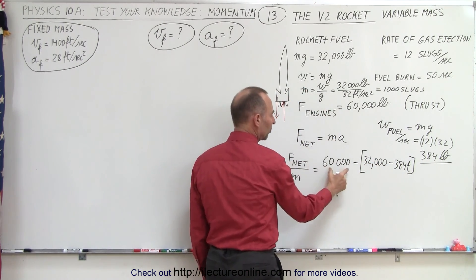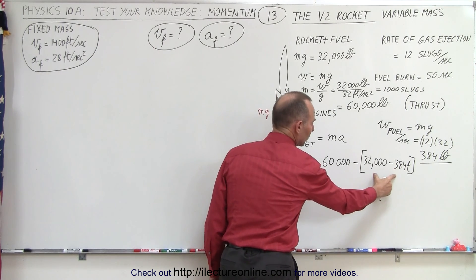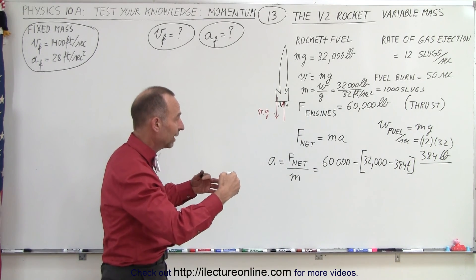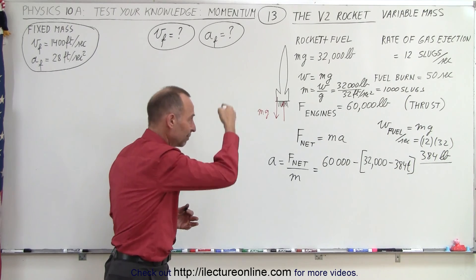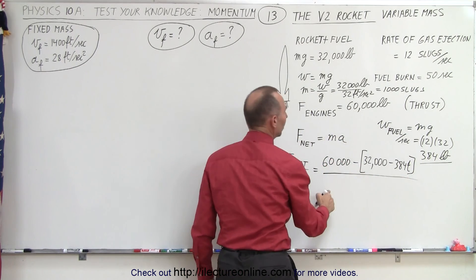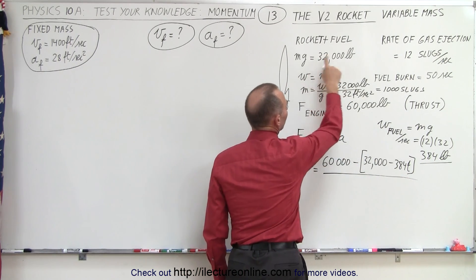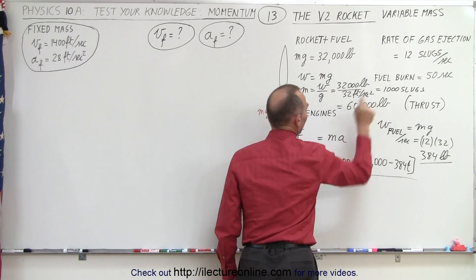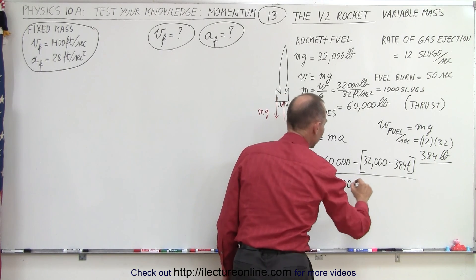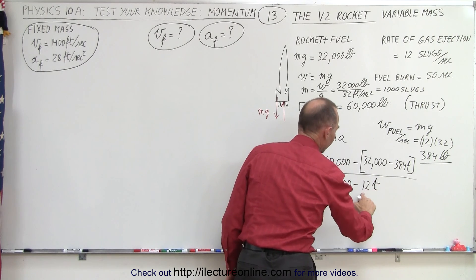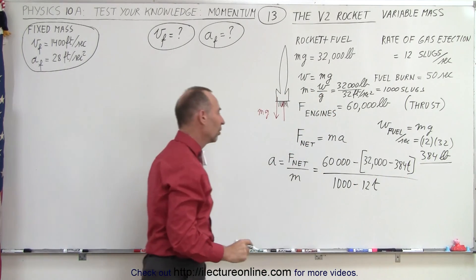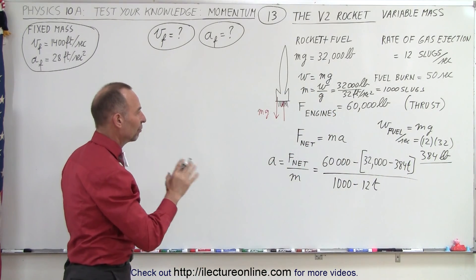The rocket engines are pushing up at 60,000 pounds, and from that we subtract 32,000 minus 384T, which means the net force on the rocket increases over time because the weight pulling down decreases over time. Then we divide by the mass. We convert the weight of the rocket to mass: 32,000 pounds equals 1,000 slugs, and that also reduces with time — 1,000 minus 12T slugs, losing 12 slugs every second.